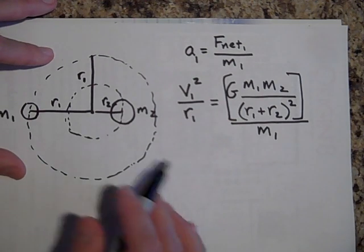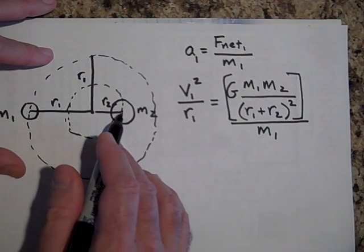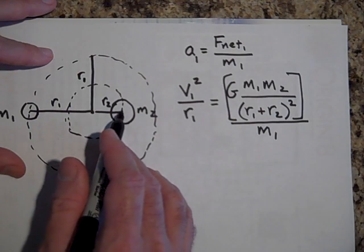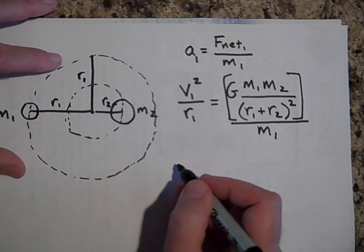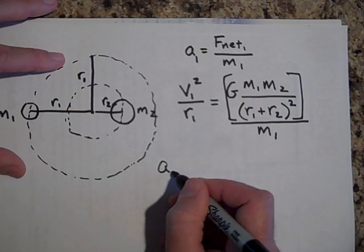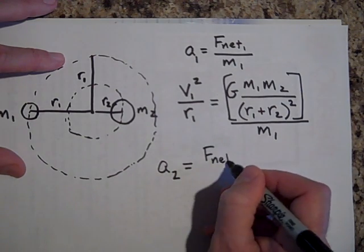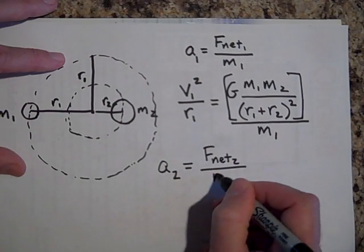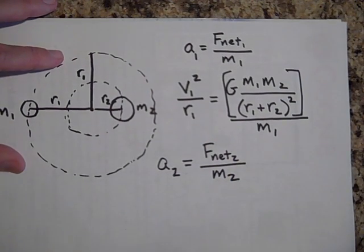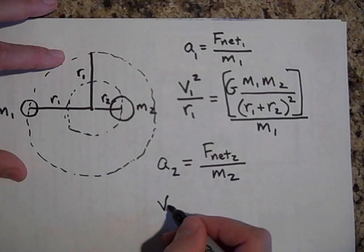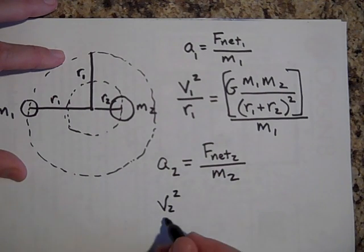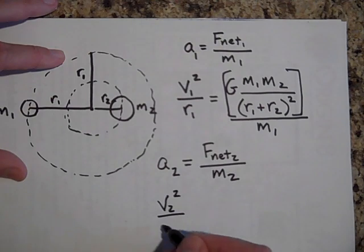Hey, what about this one? How will the, what could you say about the M2? Well, M2 should equal, the acceleration of two should equal the net force on two divided by the mass of two. So that would be V of two squared divided by R2.